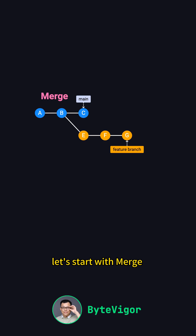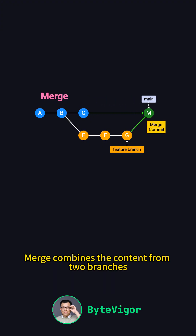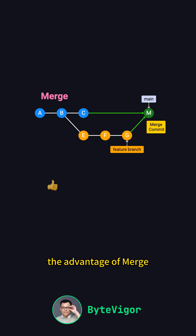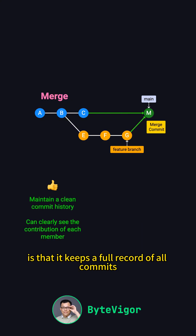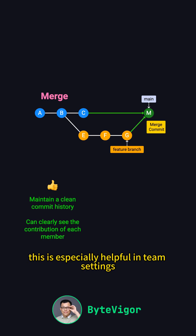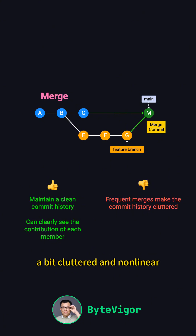First, let's start with Merge, the most common method. When you finish working on a feature branch, you can use Git Merge to bring your changes into the main branch. Merge combines the content from two branches while preserving each branch's commit history, and creates a Merge commit to mark the integration. The advantage of Merge is that it keeps a full record of all commits, so you can easily see each developer's contributions — especially helpful in team settings. However, frequent merges can make the commit history look a bit cluttered and non-linear, especially when multiple branches are being merged at the same time.